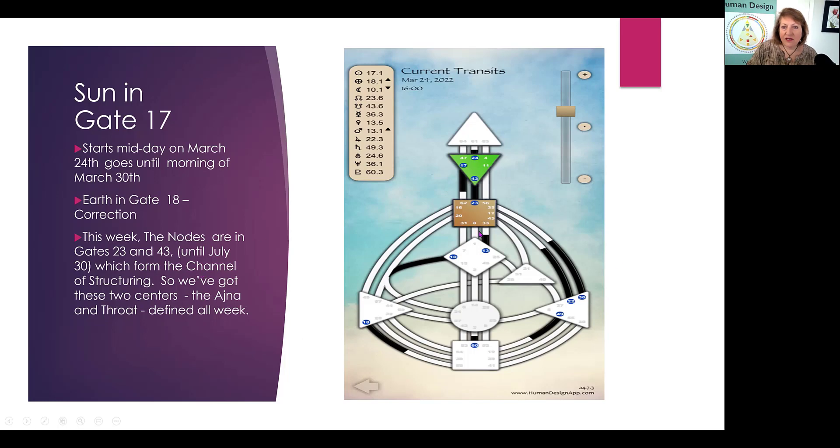But this week, it's a relatively quiet week. The nodes are in the 43-23, and so as I said before, we have the Ajna and the throat defined, but everything else is open. That hopefully doesn't affect too many people, but it does give people with the defined Ajna, it makes their thinking a little more rigid, perhaps a little more immovable, and it gives them the feeling, some people, the feeling that they've got the throat defined. But those are the only two centers that are defined all week.